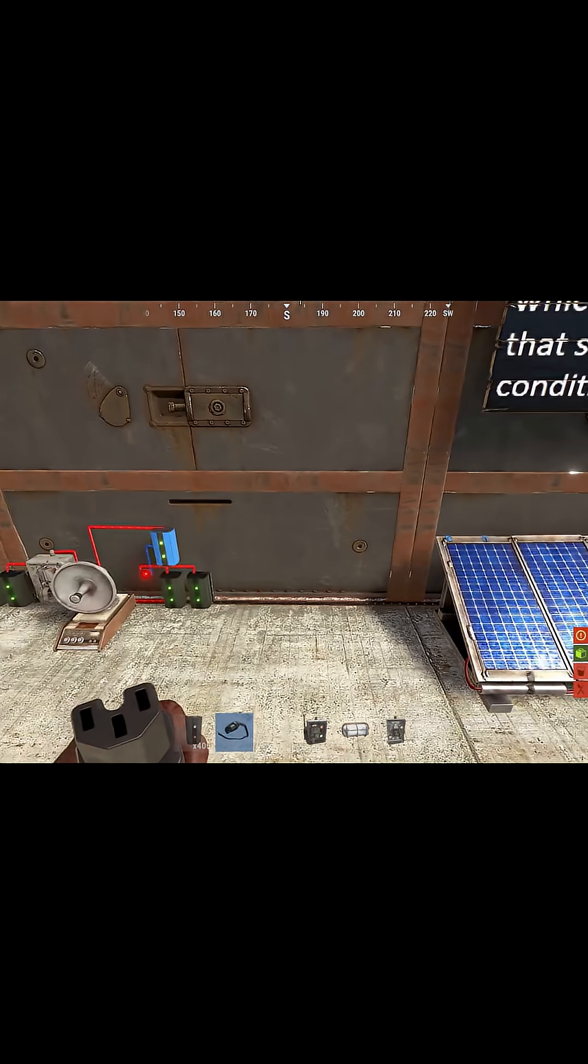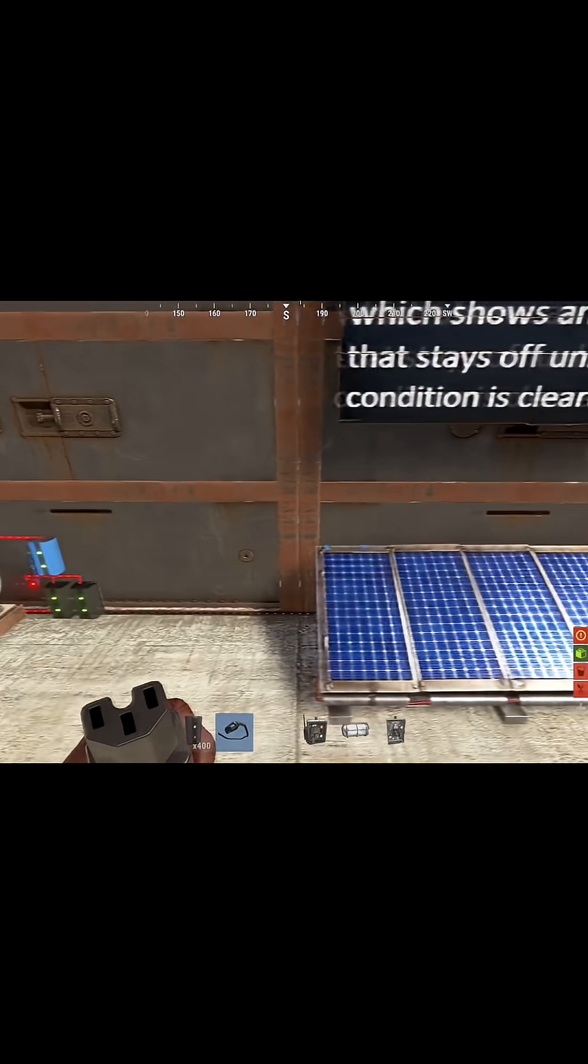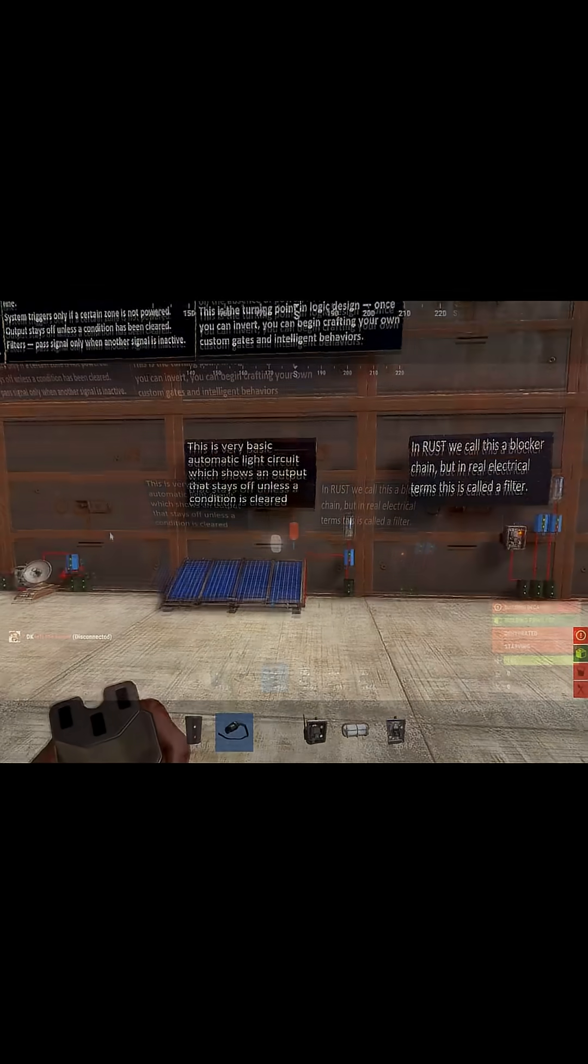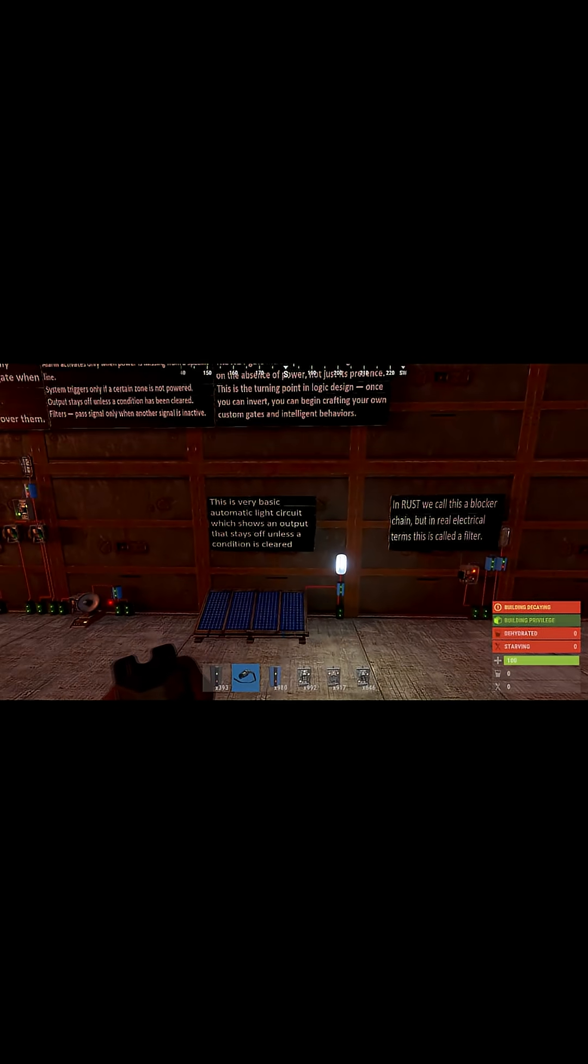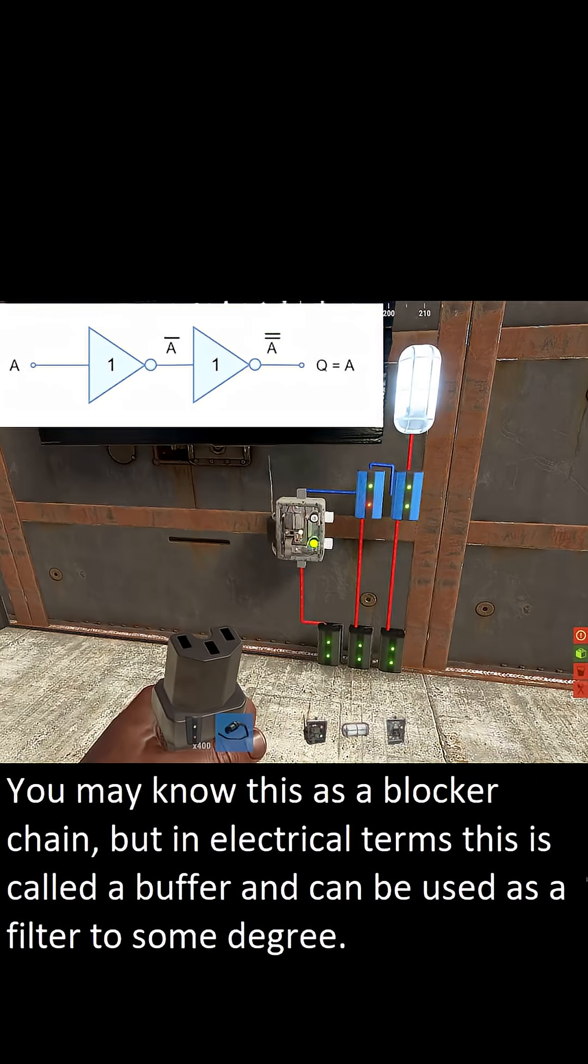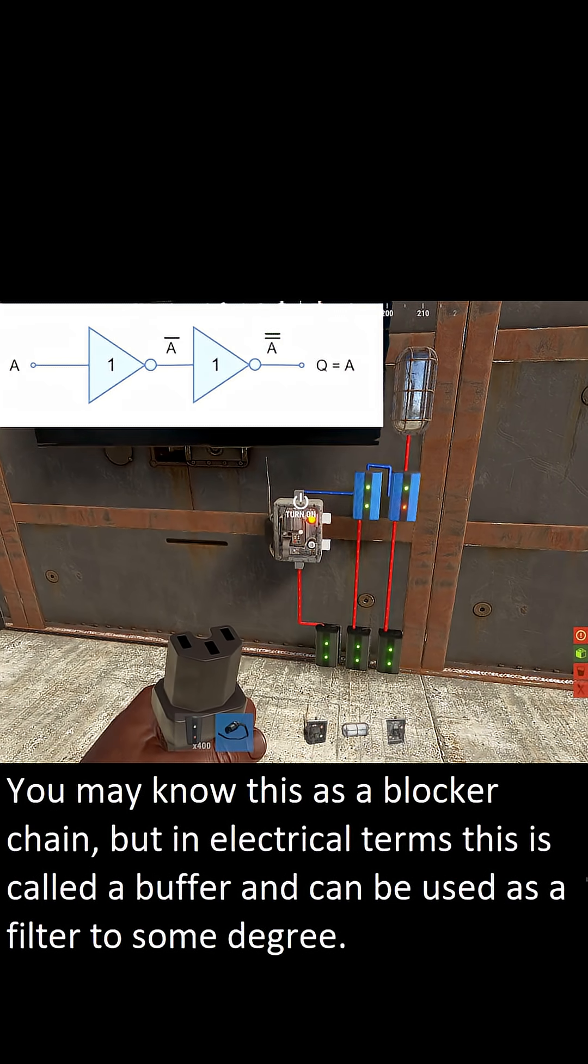An alarm that activates only when power is missing from a line. An output that stays off unless a condition has been cleared. And a filter that passes a signal when another signal is inactive.